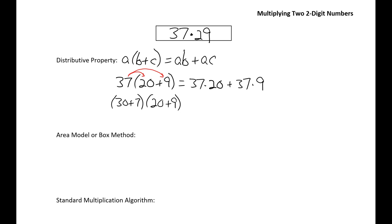Which means we have to multiply the 7 times the 20, and the 7 times the 9. And we also have to multiply the 30 times the 20, and the 30 times the 9. So the part on the right side of the equals sign will look like this.